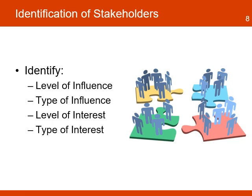A second level of analysis includes the identification of the level and type of influence a stakeholder might have on the project, and the level and type of interest. This information will help with the categorization of each stakeholder and identify the type of strategy needed in order to manage a relationship with the stakeholder.